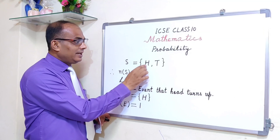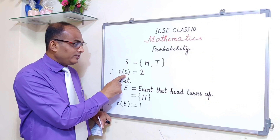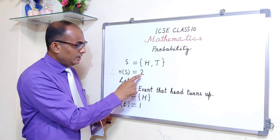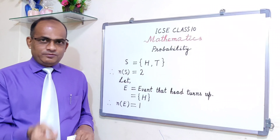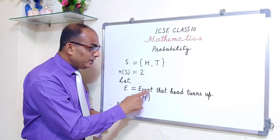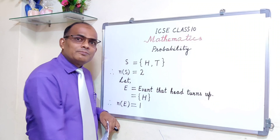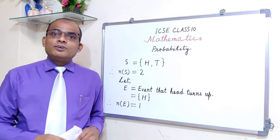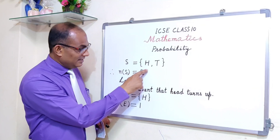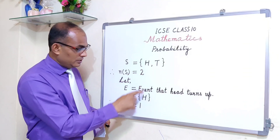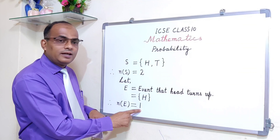So the sample space S = {H, T}. The number of sample points in S: n(S) = 2. Let E be the event of getting a head on the uppermost face. So E = {H}, only one sample point, so n(E) = 1.